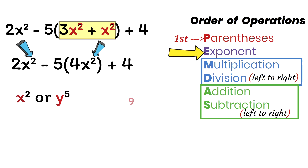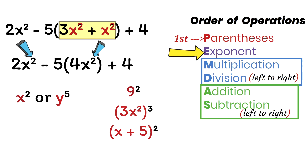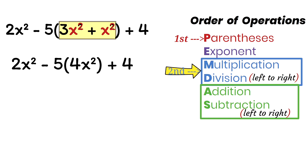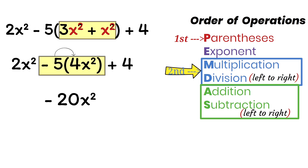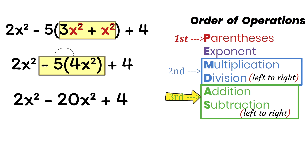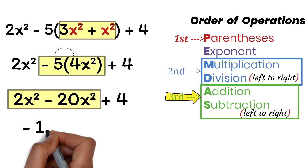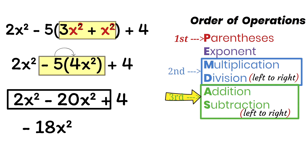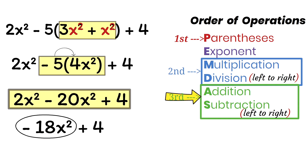That is multiplication and division from left to right. We multiply the negative 5 by the 4x squared to get negative 20x squared. This gives us 2x squared minus 20x squared plus 4. Next, addition and subtraction come in. Since 2x squared and the minus 20x squared are like terms, we can work on them: 2x squared minus 20x squared gives us negative 18x squared. So we have negative 18x squared plus 4. Since the negative 18x squared and the 4 are not like terms, this is our final answer.